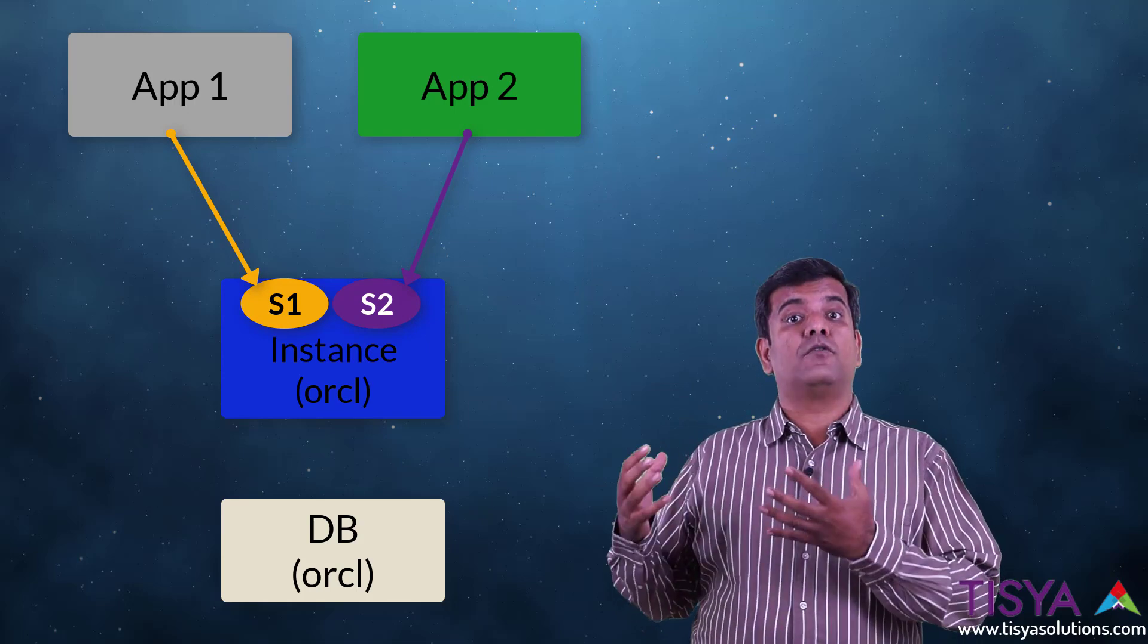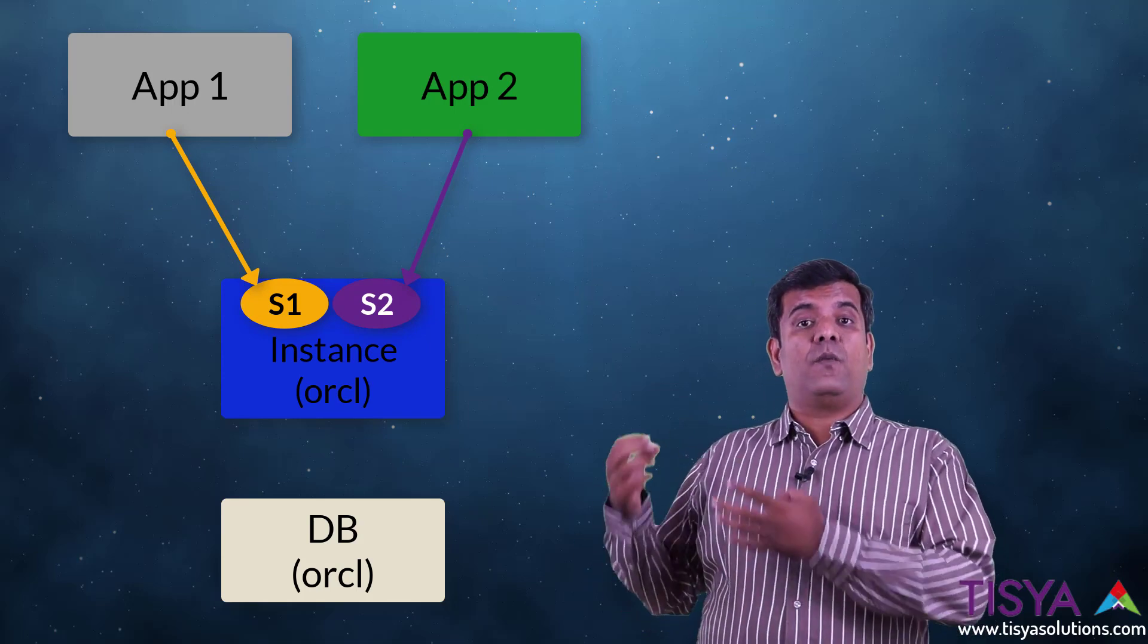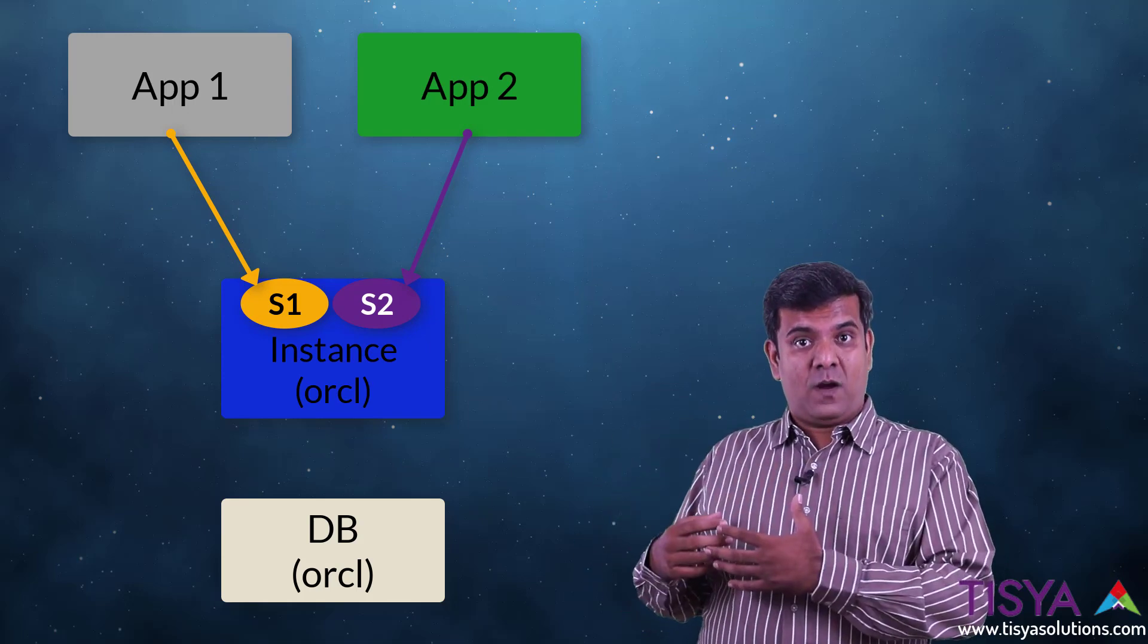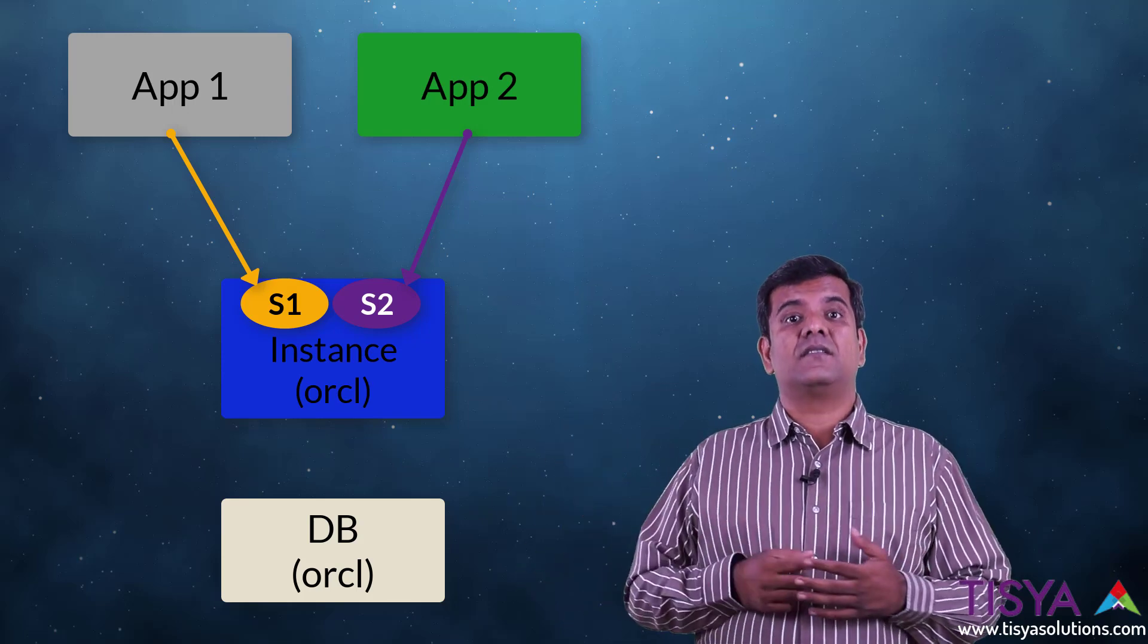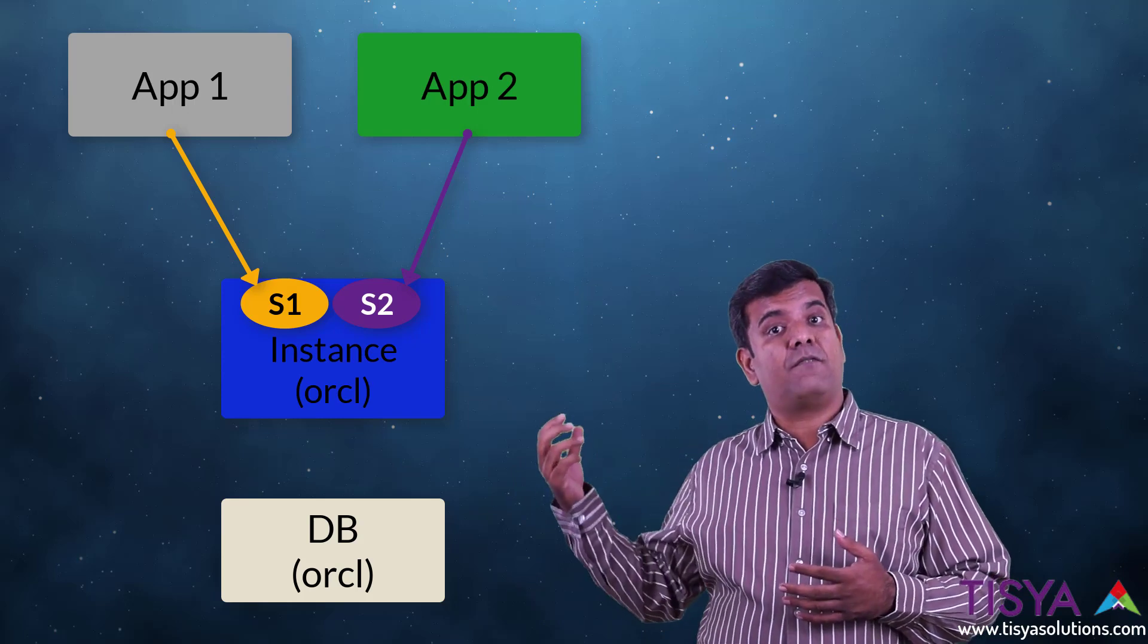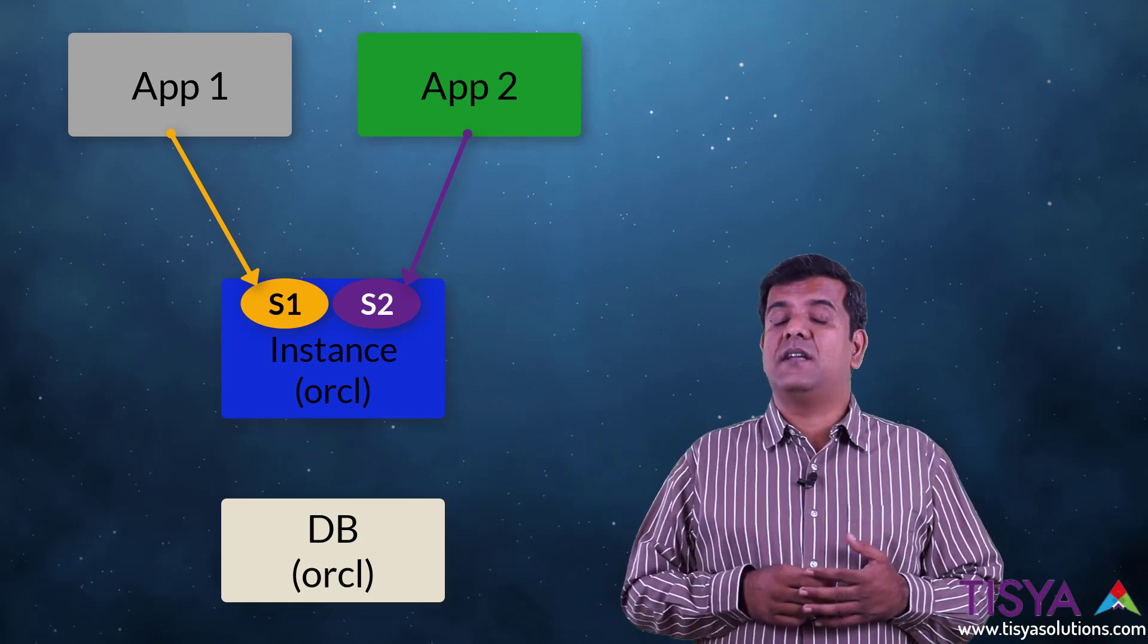This would also be visible to the listener. So when a connection request comes from application one, it will tell connect me to service one. The listener will be aware in which instance this service is available. Similarly from service two, which instance it is running on.